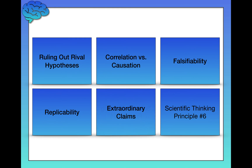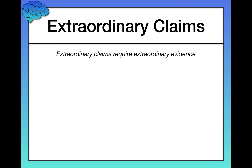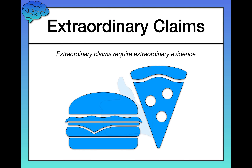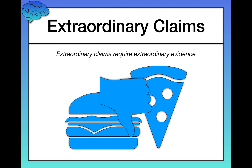Two more principles. Extraordinary claims — this states that extraordinary claims require extraordinary evidence. For example, let's say some scientist comes along and says hamburgers and pizza are the healthiest foods you can eat. Do you buy that right off the bat? We know from a lot of other studies that the nutrients inside hamburgers and pizza probably aren't that great for you. So you have to look at the evidence and ask: is this extraordinary evidence to match how extraordinary the claim is? If not, we have to reject that claim.